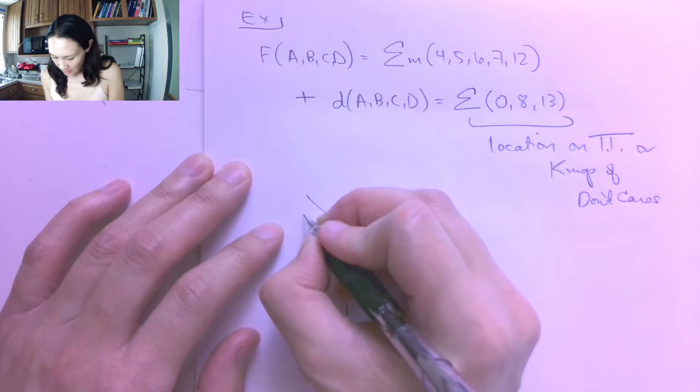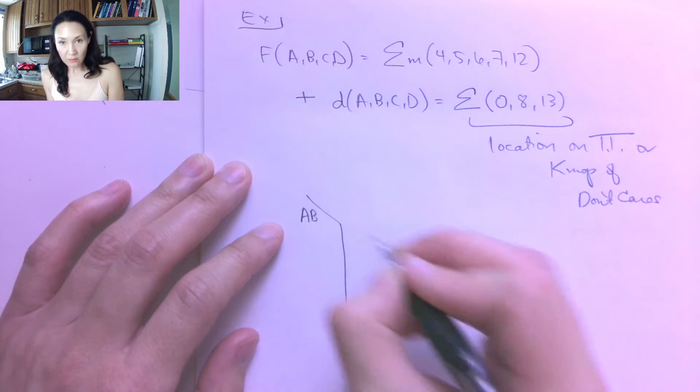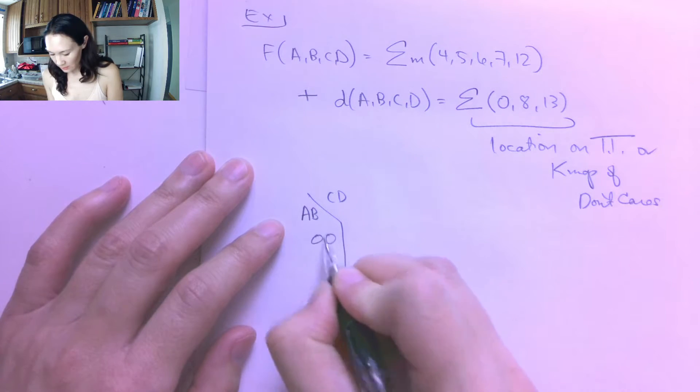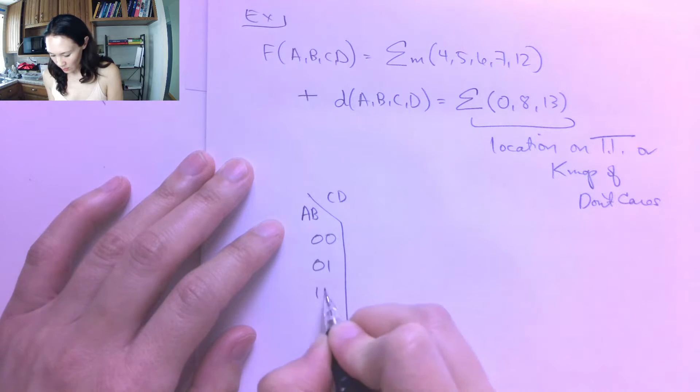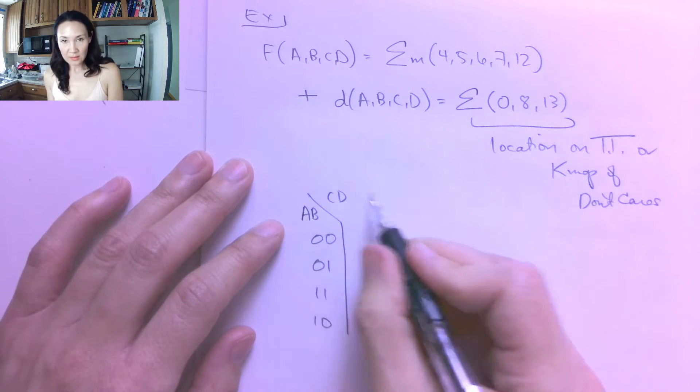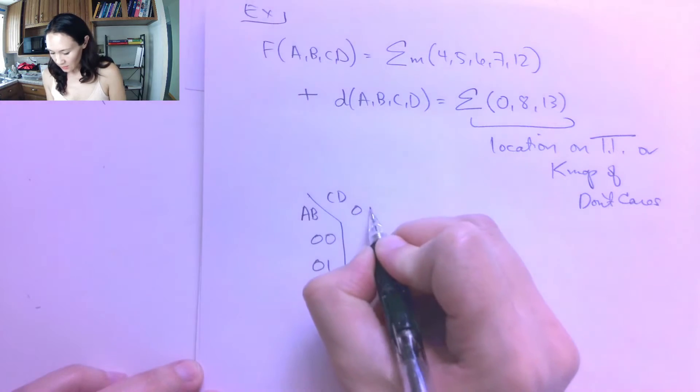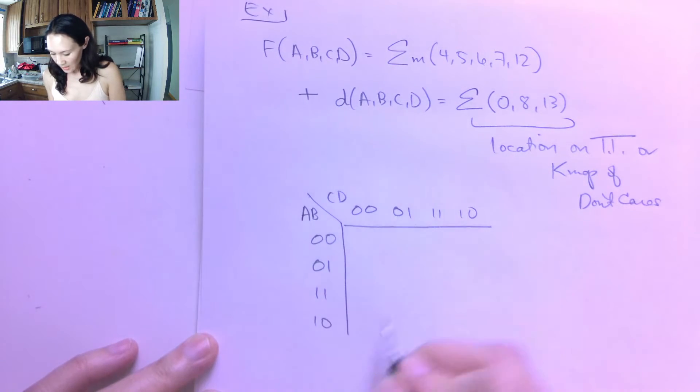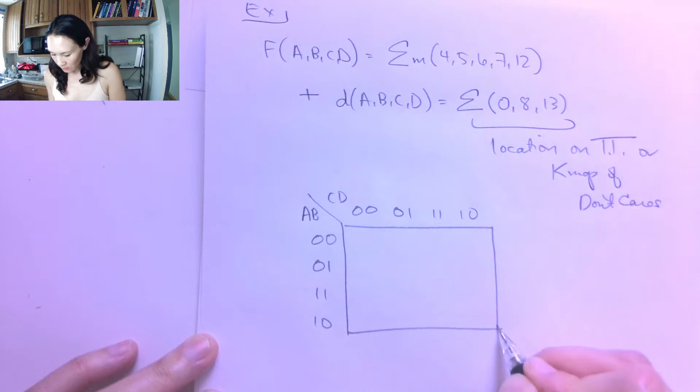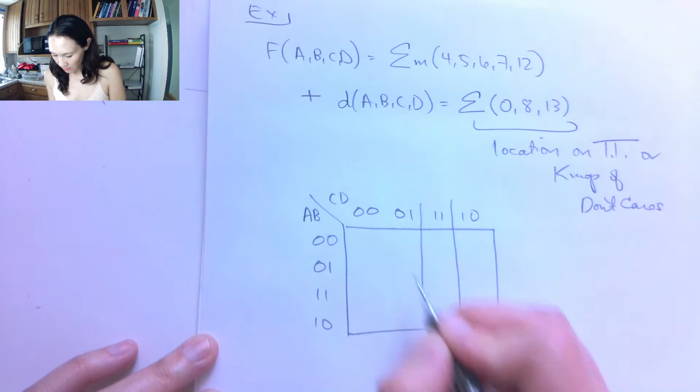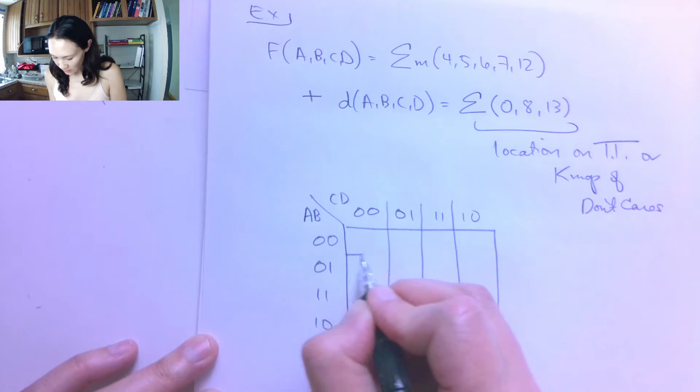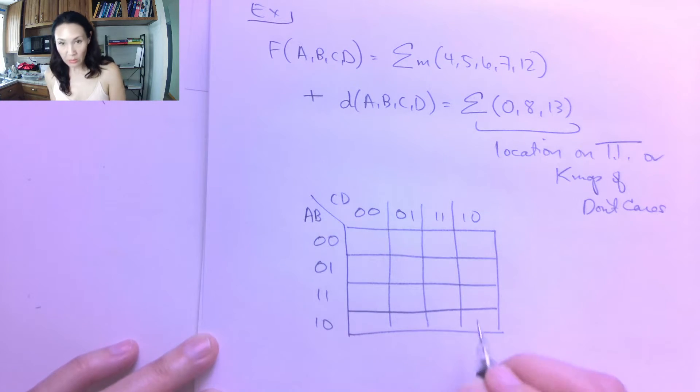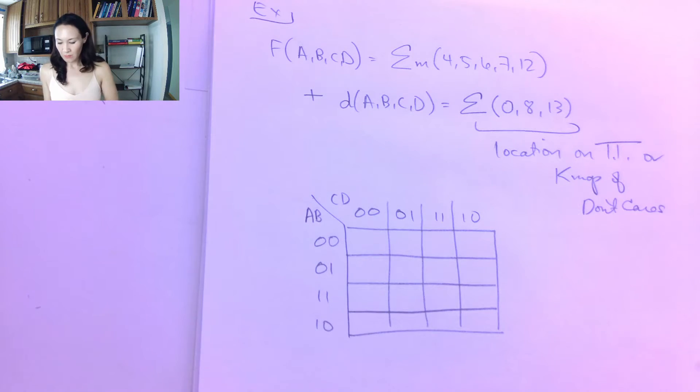So let's put this into the K-map. To make our four input K-map, I put A, B here on the left side. I put C, D above. My input combinations for A, B are 00, 01, 11, 10. And now I know where the minterms map onto this K-map. And we talked about that in a previous video. And I can use those same minterm locations to put Xs where my don't cares are.